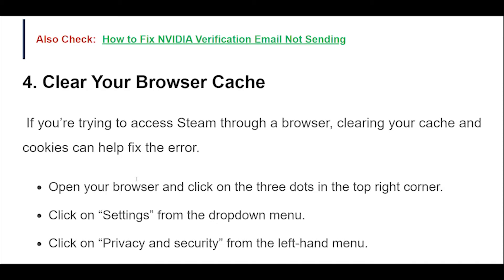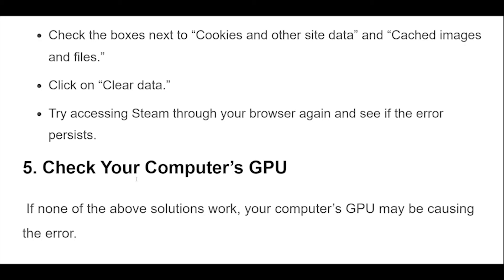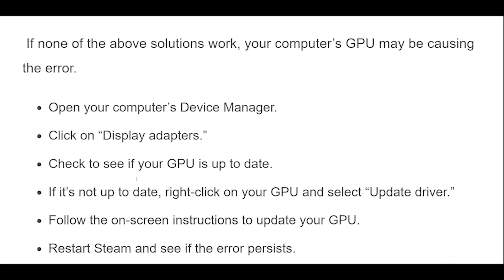Solution 4: If you're trying to access Steam through a browser, clearing your cache and cookies can help fix the error. Open your browser and click on the three dots in the top right corner. Click on Settings, then Privacy and Security from the left-hand menu. Click on Clear Browsing Data. Check the boxes next to Cookies and other site data and Cached images and files. Click on Clear Data and try accessing Steam again.